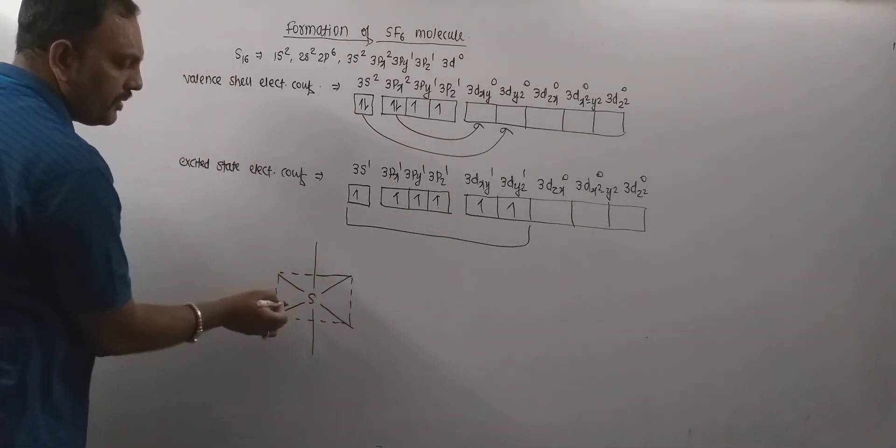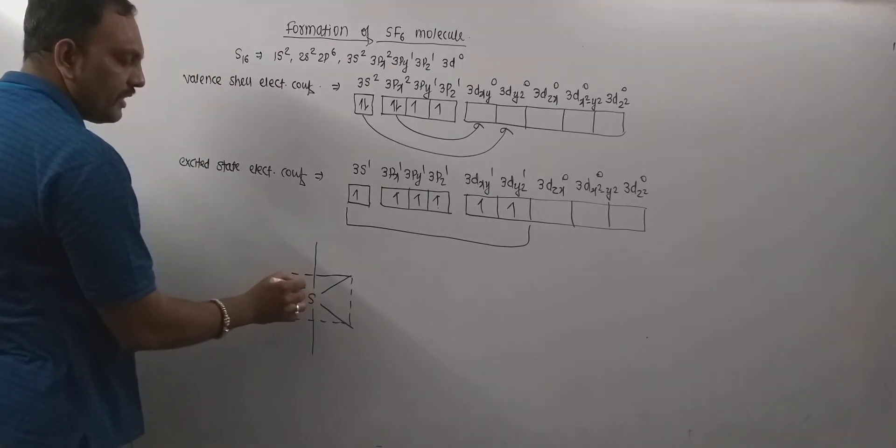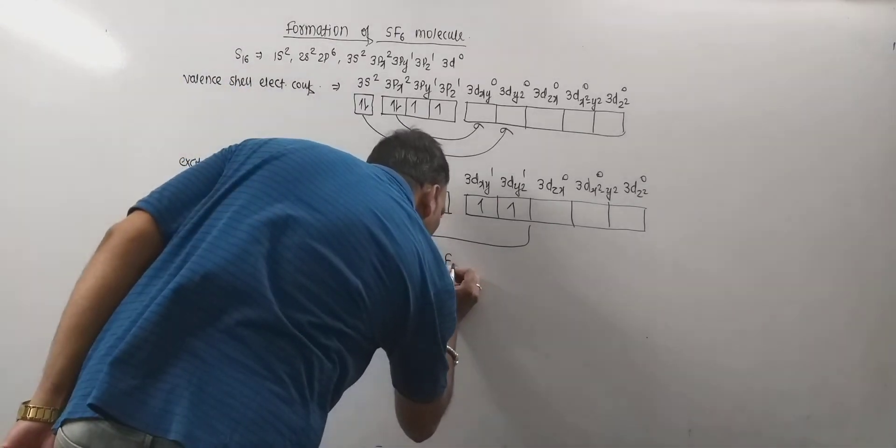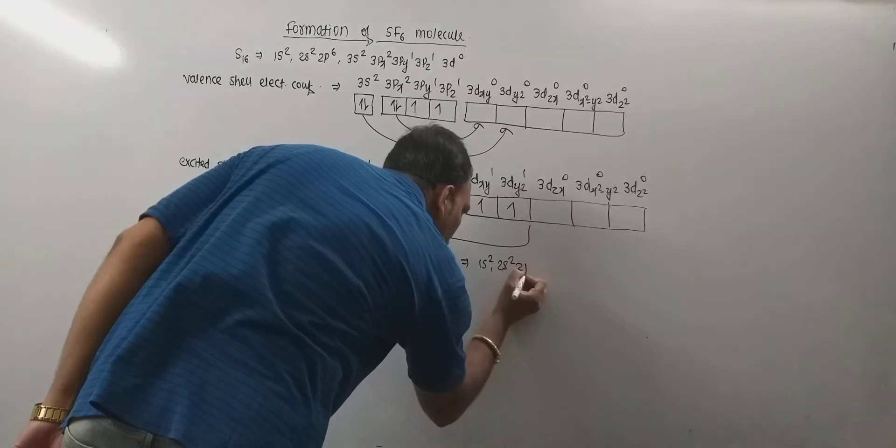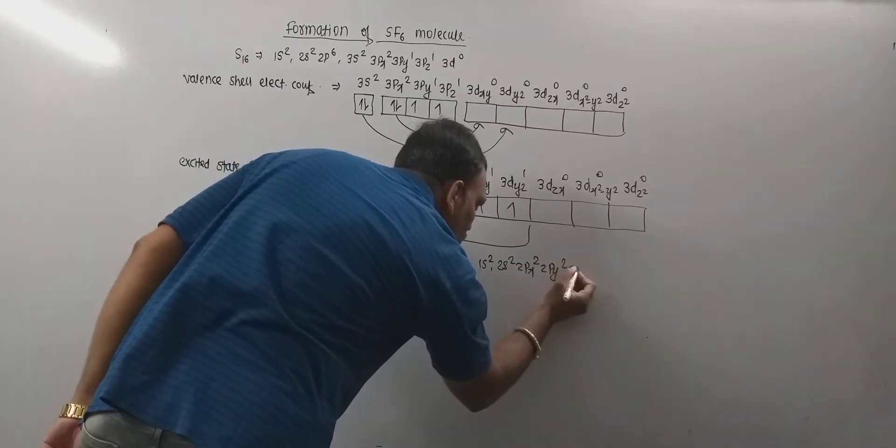These are supposed to be the hybrid orbitals. And each angle is of 90 degrees. Now, let's turn for fluorine. We know very well atomic number of fluorine is 9. Its electronic configuration is 1s2, 2s2, 2p5 that is 2px2, 2py2 and 2pz1.